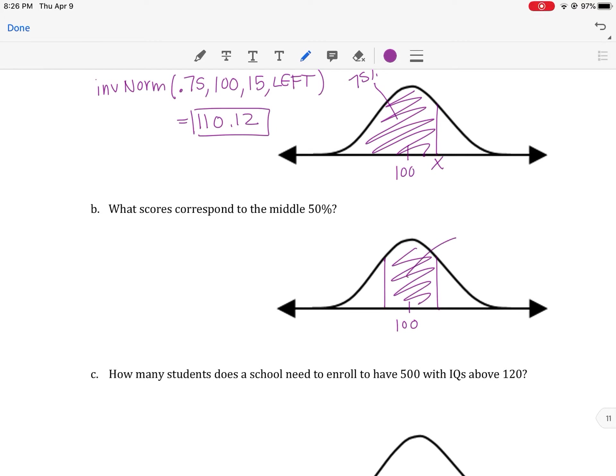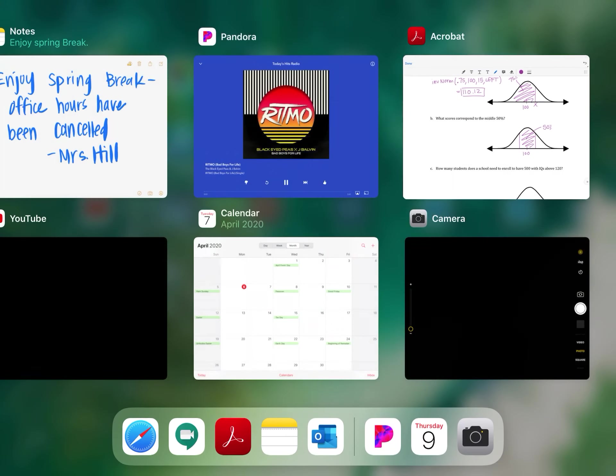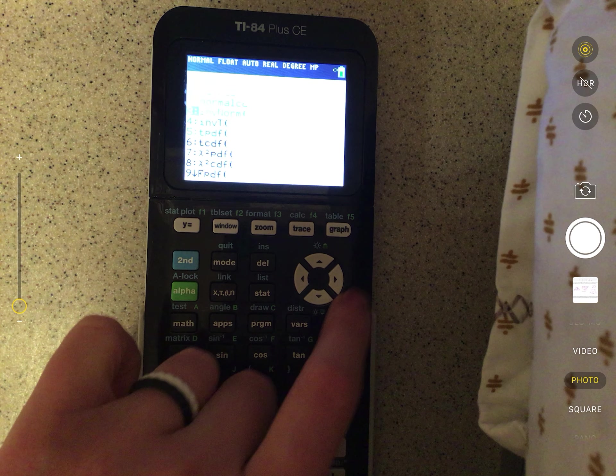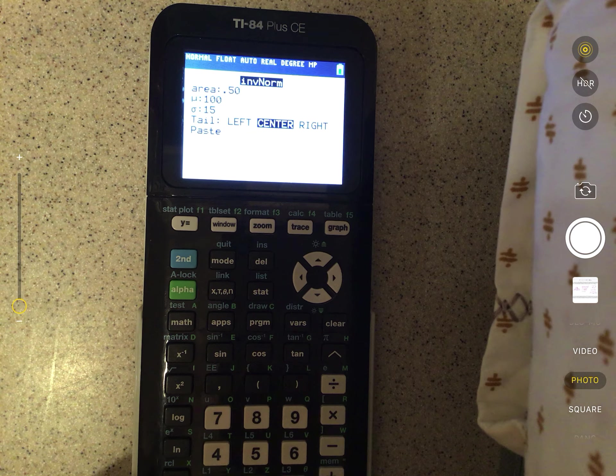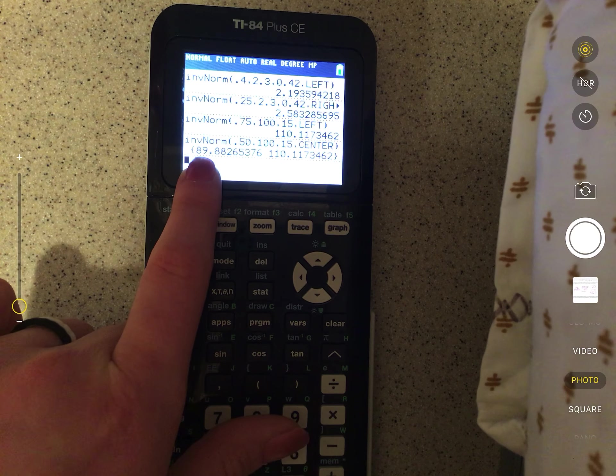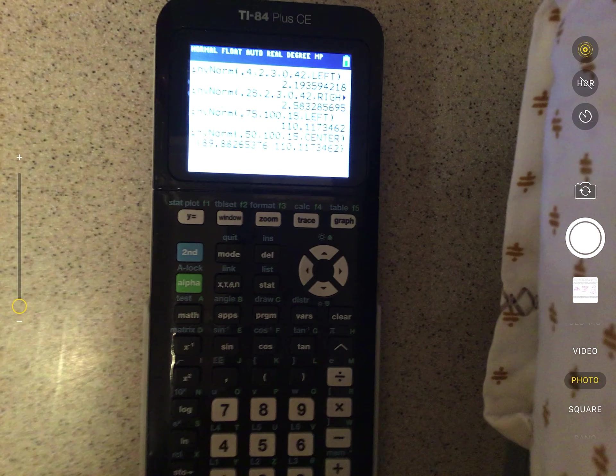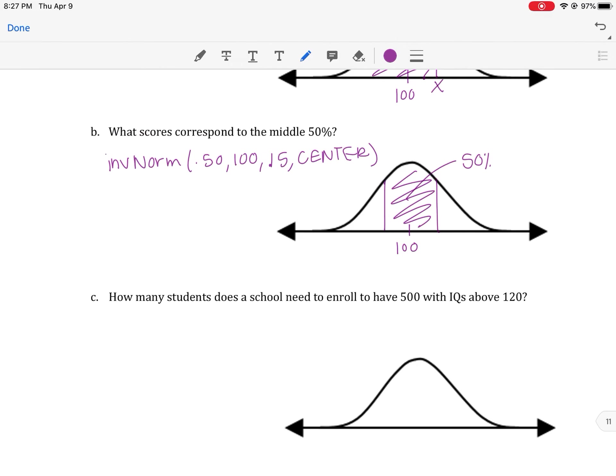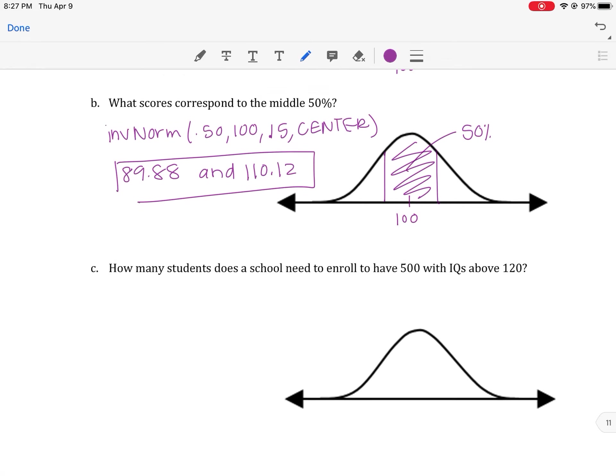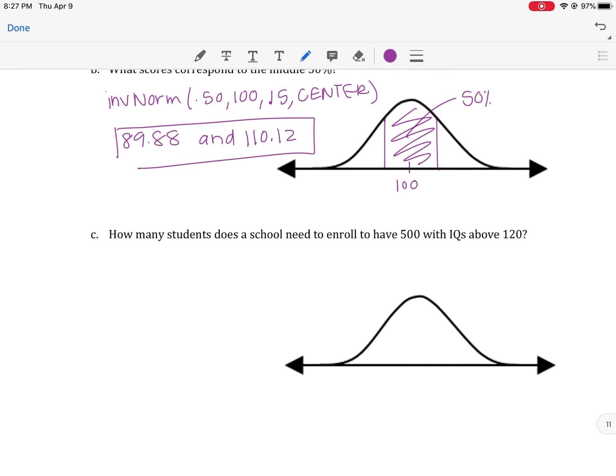The second one is similar, so you have the same mean and standard deviation, but now it wants the middle 50%. So we're saying if we take the chunk out of the middle, this percent right here is going to be 50%. We're going to have second VARs, go down to number three because it's giving us a percent. We're doing now 50%, same mean, same standard deviation. But notice how your calculator gives you the option to hit center. And then you just hit paste. And it's going to be between 89.88 and 110.12. So we're going to do inverse norm of 0.50, 100, 15, and then center. And we get two cutoffs, the low and the high: 89.88 and 110.12.